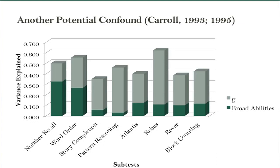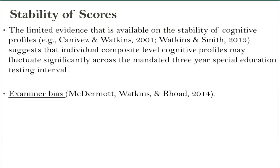There's a great quote from Coretta and Rhee where they talked about how, when we don't account for this, we're basically giving away G's effects to the broad abilities — or falsely ascribing them to the broad abilities when that's not the case.